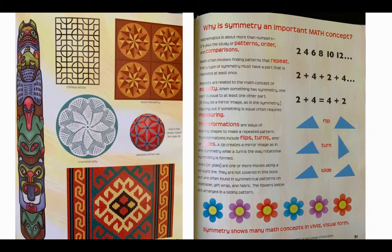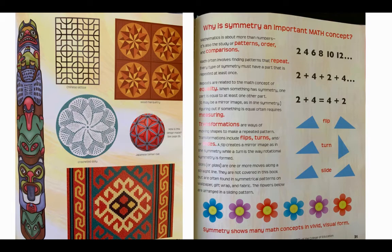So third graders, why is symmetry an important math concept? Mathematics is about more than numbers — it's also about the study of patterns, order, and comparisons. Math often involves finding patterns that repeat. Every type of symmetry must have a part that is repeated at least once. Repeats are related to the math concept of equality. When something has symmetry, one part is equal to at least one other part. It may be a mirror image, as in line symmetry. Figuring out if something is equal often requires measuring.